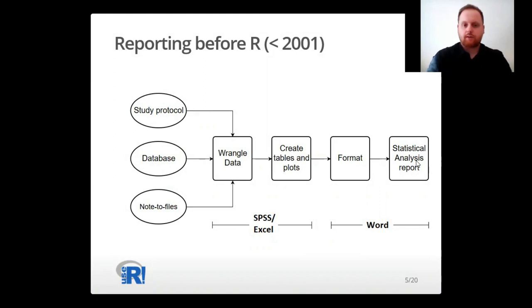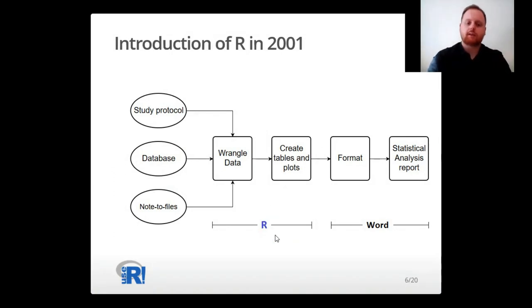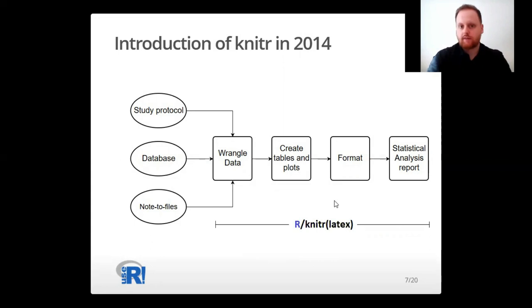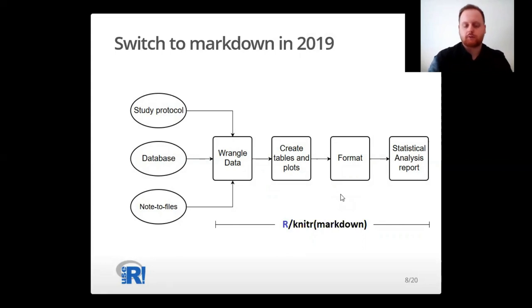With the introduction of R in 2001, SPSS and Excel were replaced by R, but between R and Word we still had to do a lot of copy and pasting from the R console, especially regarding tables. This became redundant with knitr in 2014, because now all four steps could be done from one R Markdown document. At that point we used LaTeX as a formatting language, but last year we switched to Markdown because it is a little easier to understand and write.